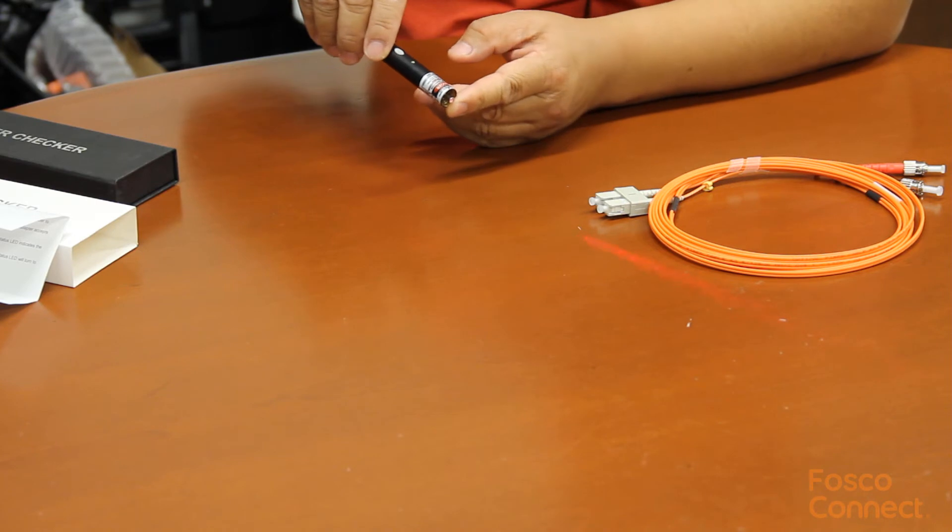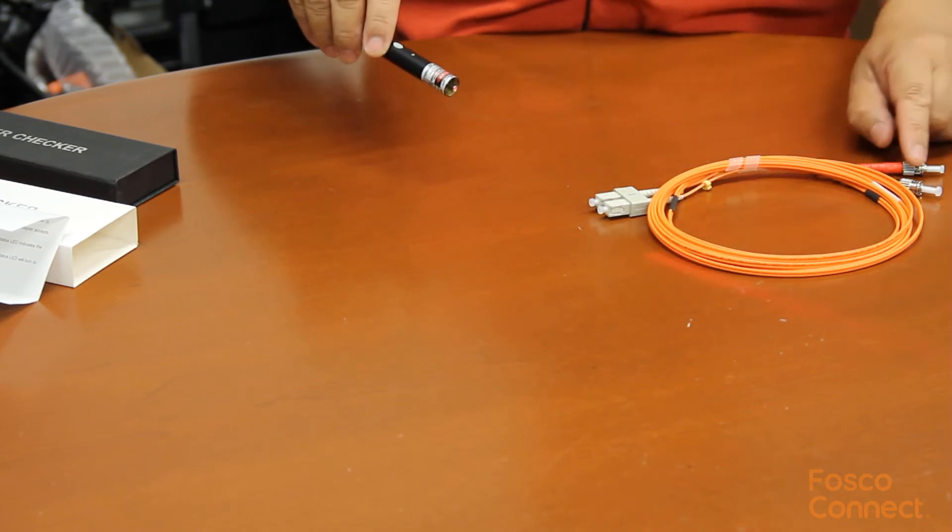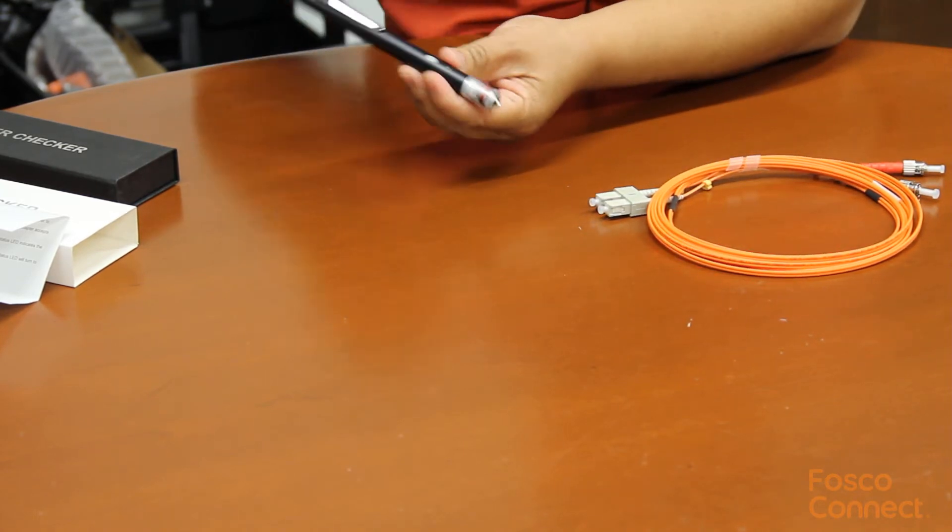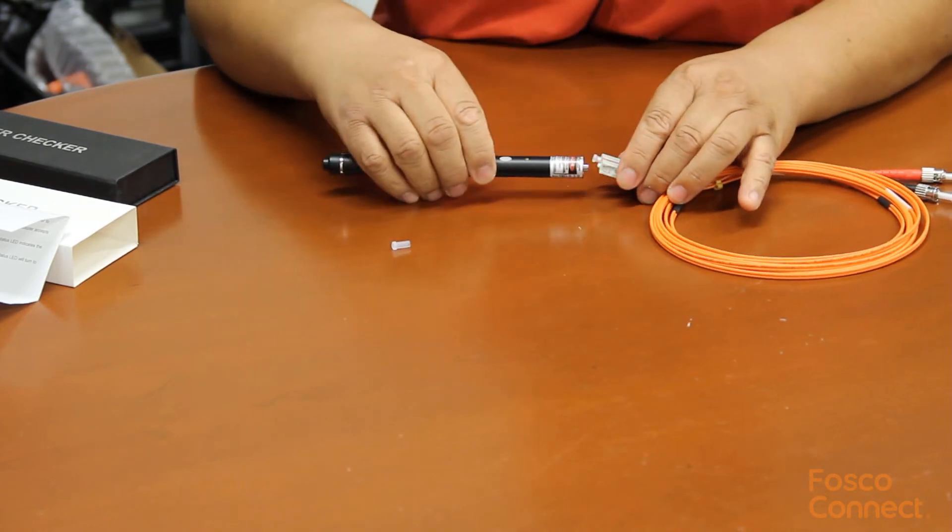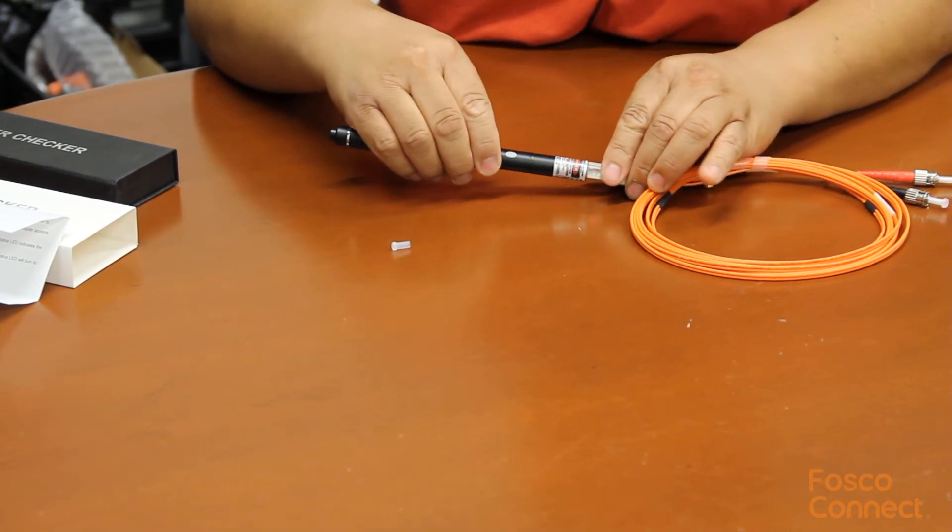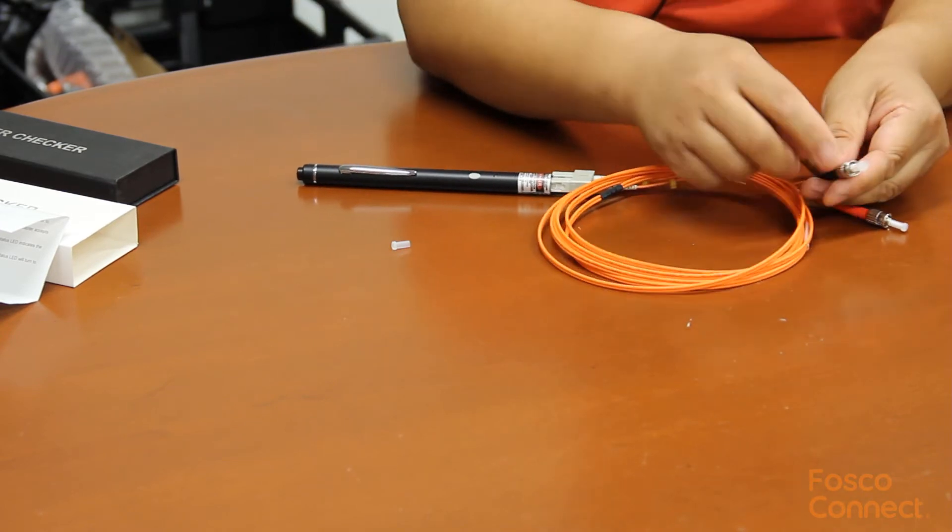This adapter can accept all the 2.5mm ferrule connectors such as SC, ST, and FC connectors. So let's insert one SC connector into the adapter. We got the light come out from the other side.